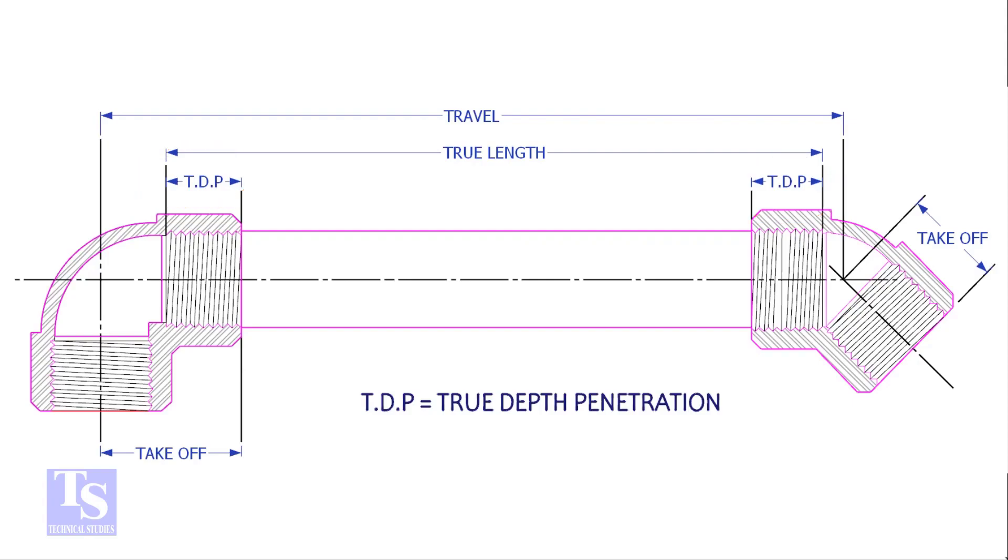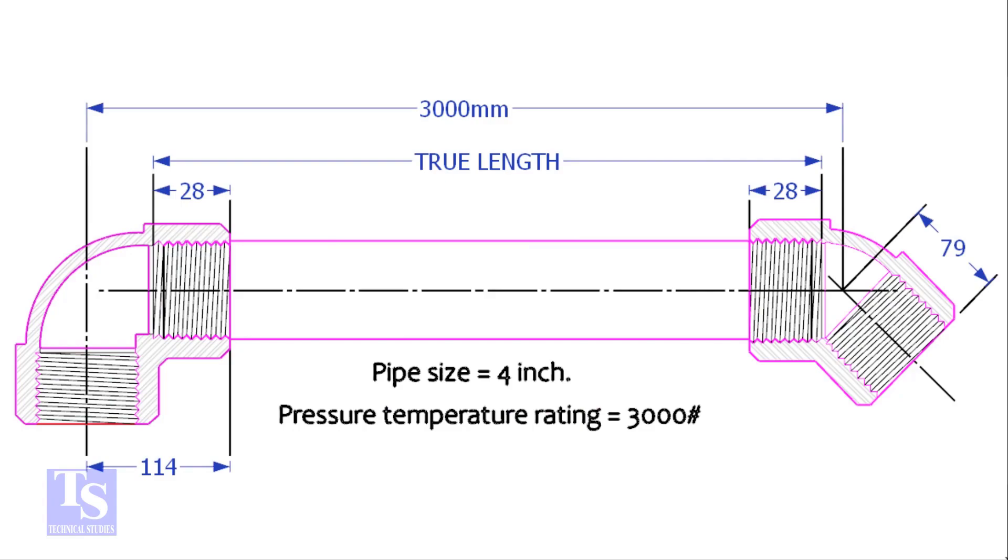Let us calculate the true length of a pipe with 90-degree and 45-degree elbows. The pipe size is 4-inch, pressure rating is 3,000 pounds, and the travel length is 3,000 millimeters.